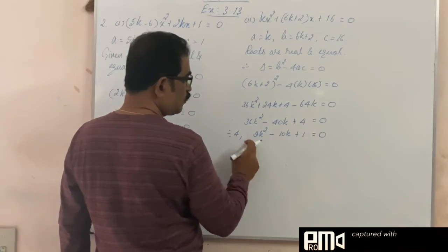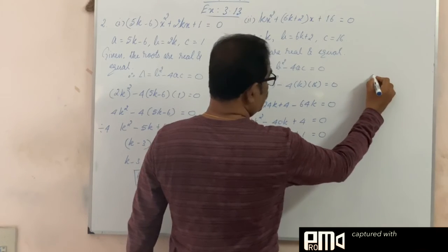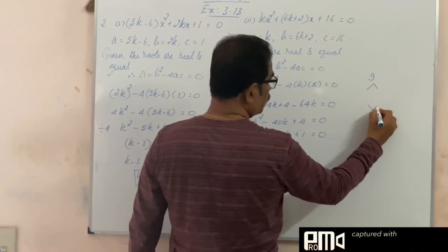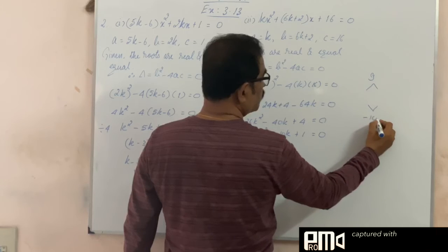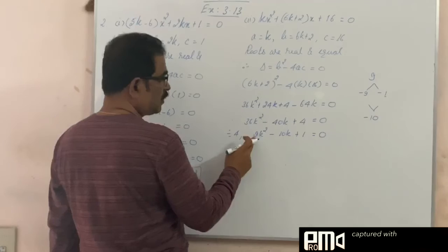So, product of the factors, 9 into 1 is 9, and sum of the factors is minus 10. Product of the factors is 9, sum of the factors is minus 10, factors are minus 9, minus 1.